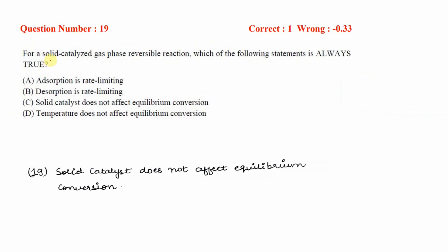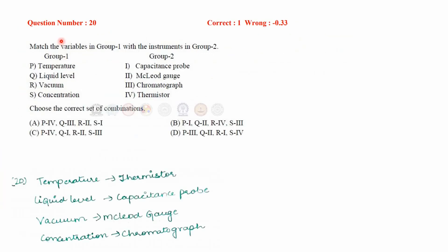The next question asks which statement is always true for a solid-catalyzed gas-phase reversible reaction. The correct option is C: a solid catalyst never affects the equilibrium conversion. For question 20, matching instruments to measured quantities, the correct option is C — temperature is measured by thermistor, liquid level by capacitance probe, vacuum by McLeod gauge, and concentration by chromatograph.